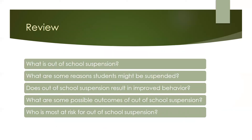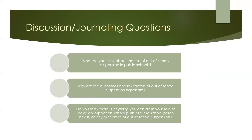Now for a bit of review of this module. I'm going to ask you some basic questions about what you learned. What is out-of-school suspension? How would you describe it in your own words? What are some of the reasons given for suspension? Does out-of-school suspension tend to result in improved behavior? What are some possible outcomes of out-of-school suspension? What groups of students are at higher risk for out-of-school suspension? For discussion and journaling: if there's someone you can discuss these with, like a colleague or someone else doing these modules with you, that is excellent. Otherwise, feel free to journal your answers somewhere you can come back to in the future. You can pause the video after each question to discuss or journal.